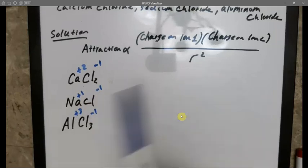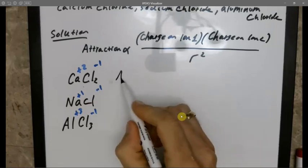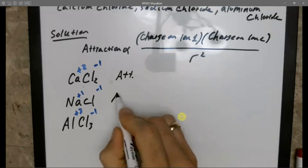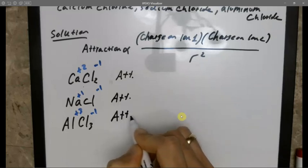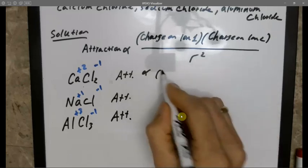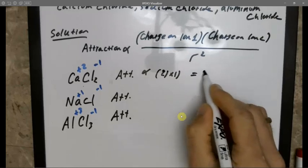Since the R is the same, I'm going to neglect it. The attraction for each one of them is proportional to the charge on ion 1 times the charge on ion 2. So fairly simple, 2 times 1, so the answer here will be 2.